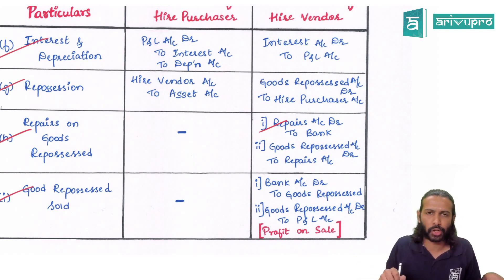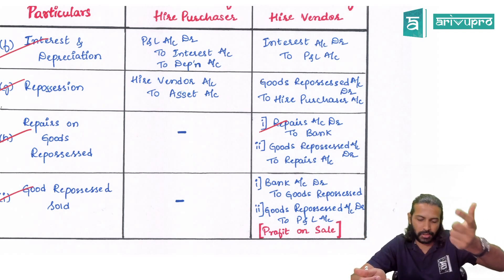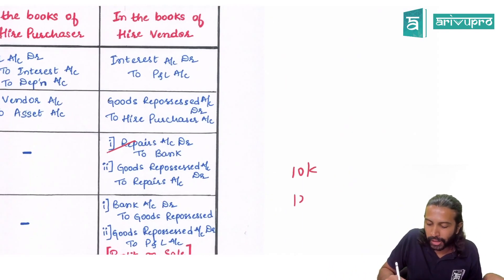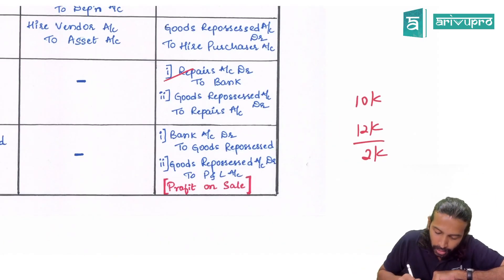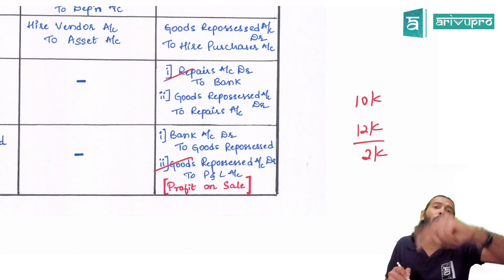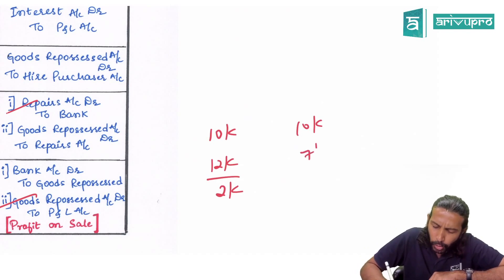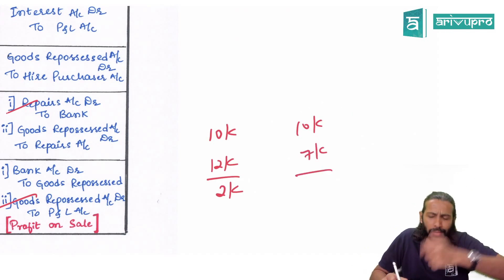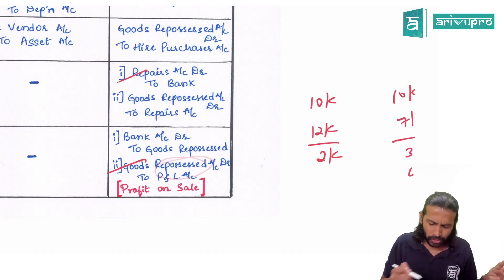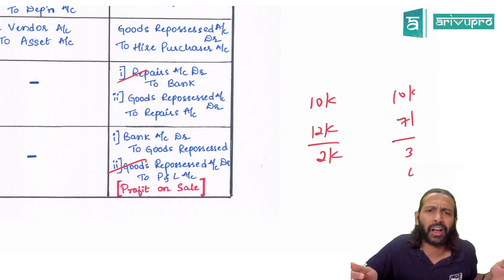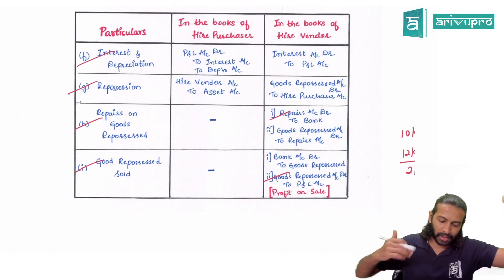When you prepare the Goods Repossessed Account, there may still be a balancing figure representing profit or loss. For example, goods repossessed at ₹10,000 and sold at ₹12,000 gives a ₹2,000 profit: Goods Repossessed Account debit to P&L. It could also be a loss — for example, repossessed at ₹10,000 but sold for only ₹7,000, giving a ₹3,000 loss: P&L Account debit to Goods Repossessed. This covers entries from end to end, from entering the HP agreement to goods repossession.